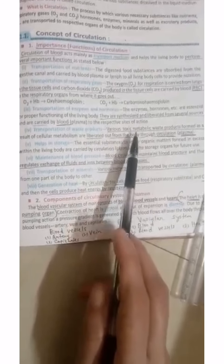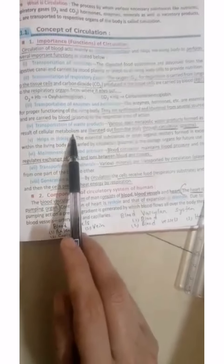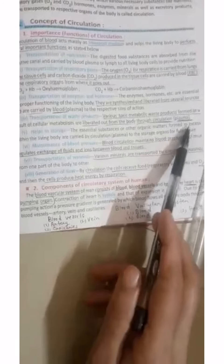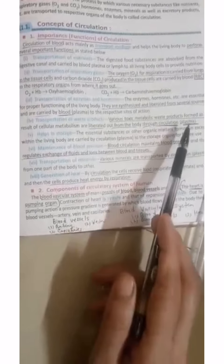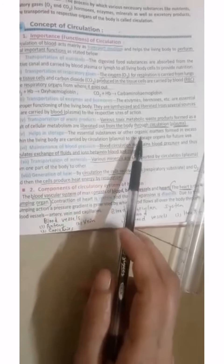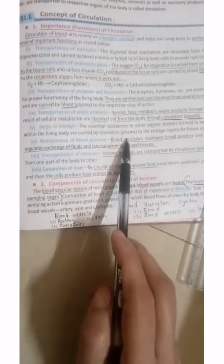Next is transportation of waste product. Various toxic metabolic waste formed as a result of cellular metabolism will be removed from the body through plasma. Help in storage. Essential substances and organic matter that is in excess in living body will be carried with the help of plasma to the storage organ for future use.